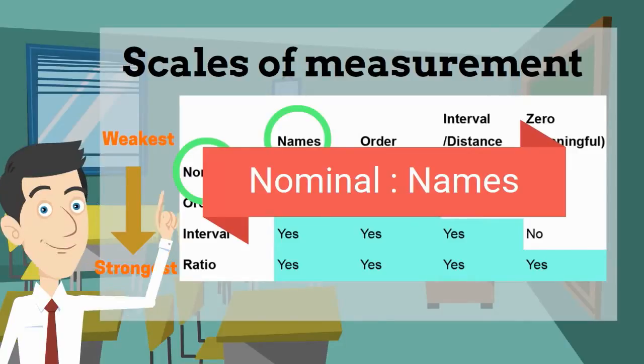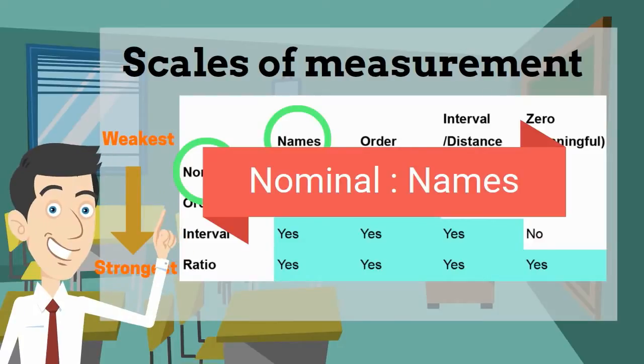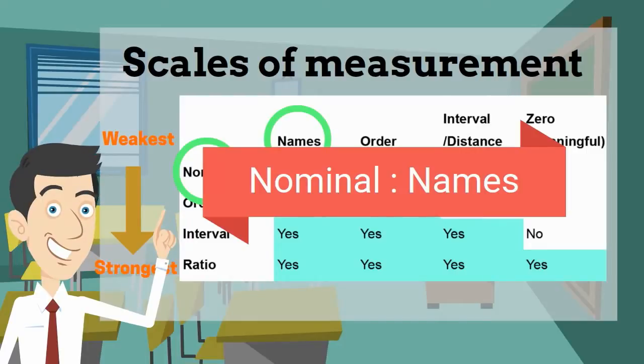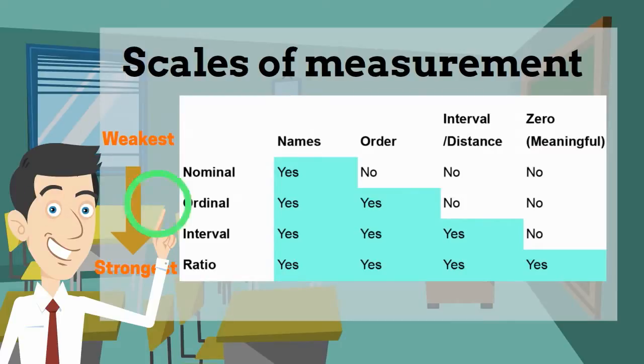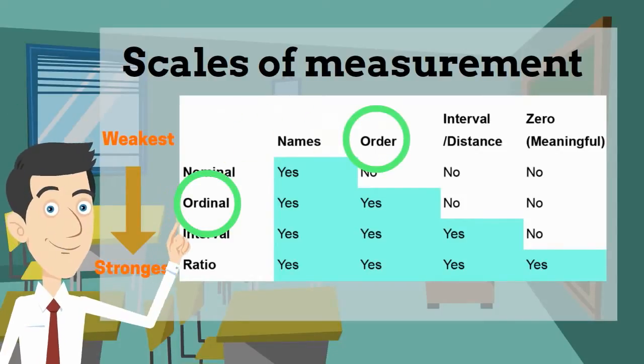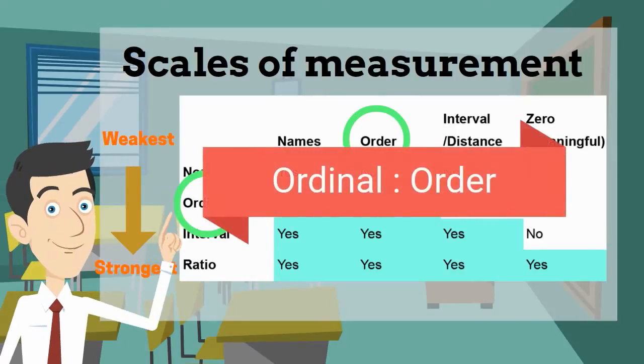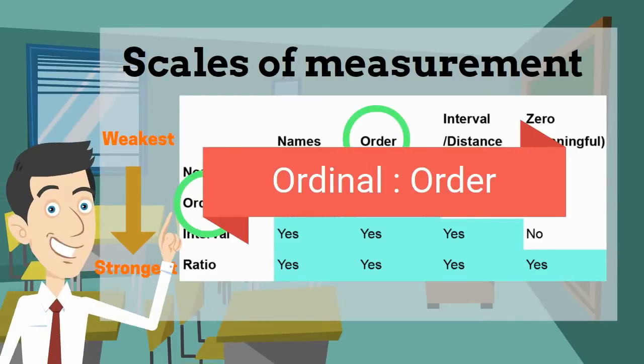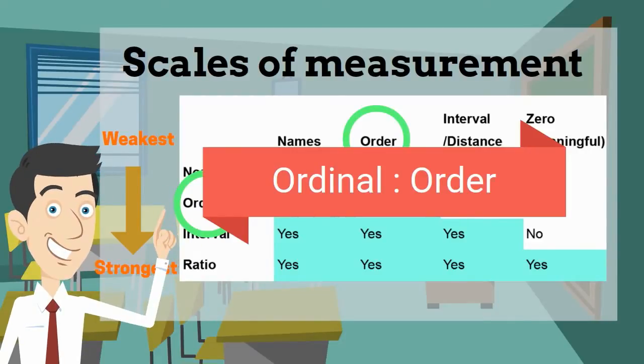Now moving on to the next level: ordinal. Order data you can just simply associate with ordered. So order, ordinal - this sounds pretty similar, right? And that's actually the only additional attribute that it has over nominal. The example for this will be like movie rating.